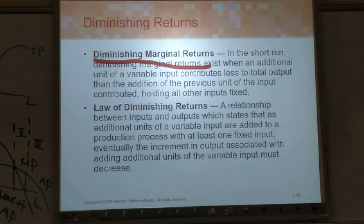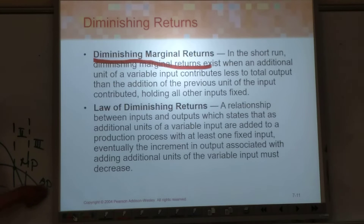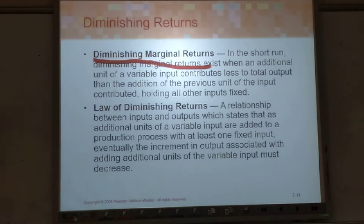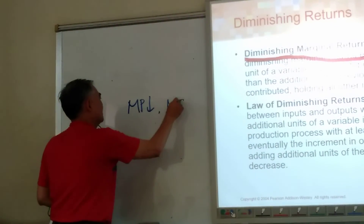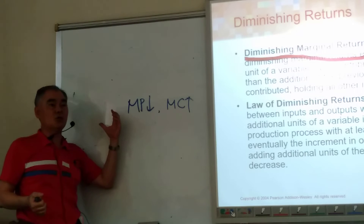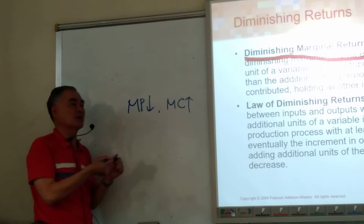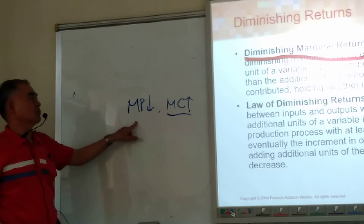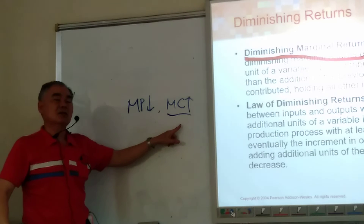Diminishing marginal returns — what does that mean? That means you have increasing marginal cost. If you have diminishing marginal return, you put in the same amount of input but the quantity you get is less and less. So diminishing marginal product implies increasing marginal cost. These two come together.